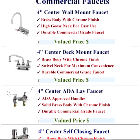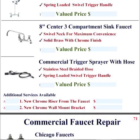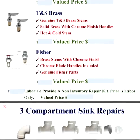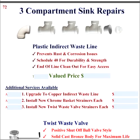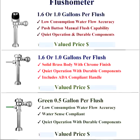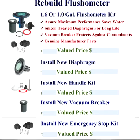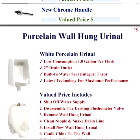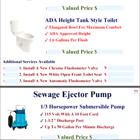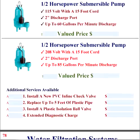Our commercial section has faucet installs as well as faucet repairs — the most common ones you'll run into in the field. There's also a section for items not on your truck or specialty order items. Three compartment sink repairs. Flushometers — we offer the green 0.5 gallon flush, and the rebuild covers anything you'll run into on a flushometer. Sewage ejector pumps — we do one-third and half horsepower. On the half, we offer 115 and 208 volt.